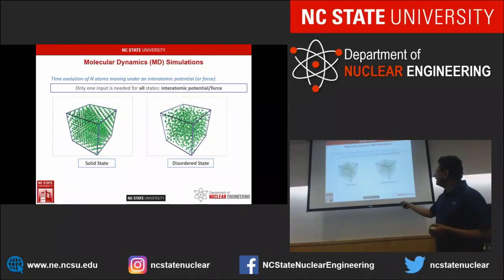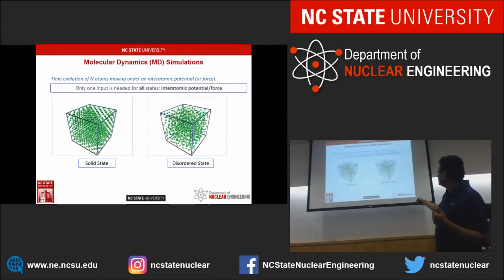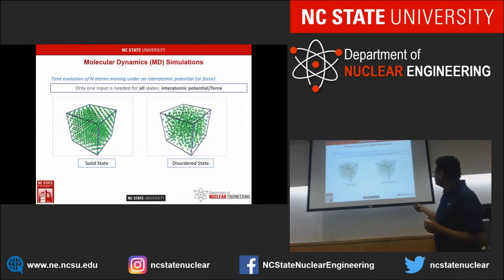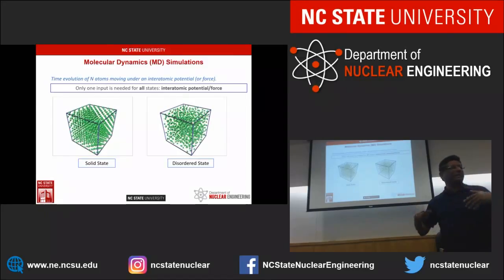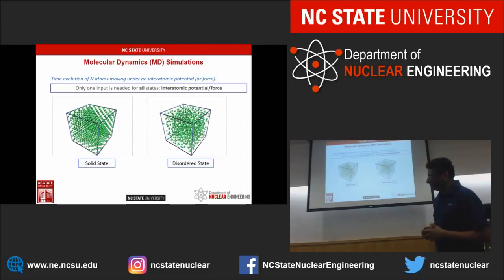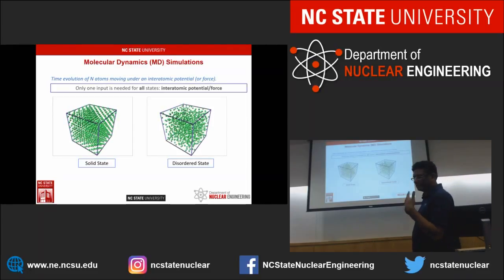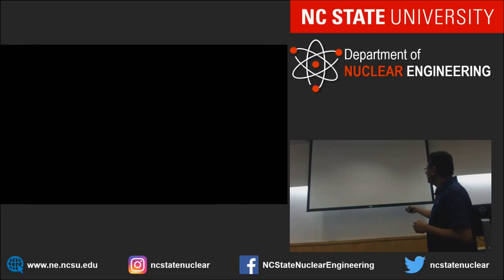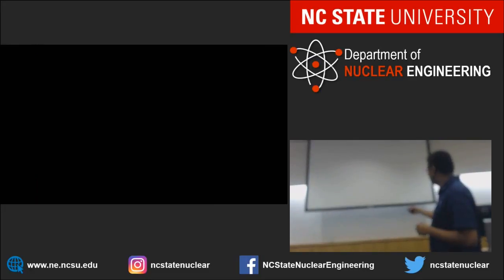In the solid state, you can see atoms vibrating back and forth about their equilibrium positions. In the liquid or amorphous state, atoms are actually jumping from one place to another — this is an example of a diffusive state, as in liquids and amorphous states. Whereas in the solid, we see only atoms vibrating back and forth.